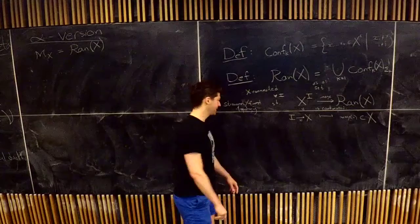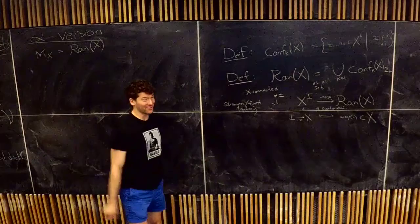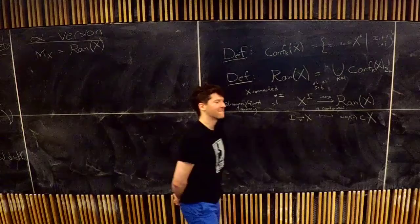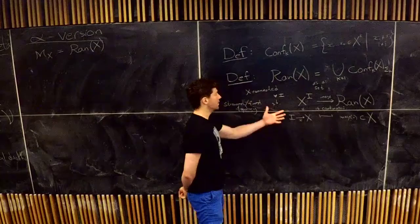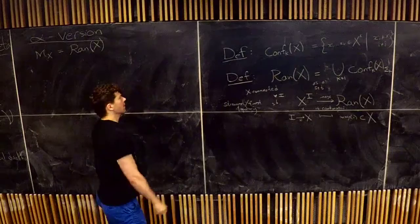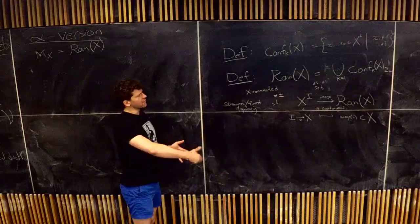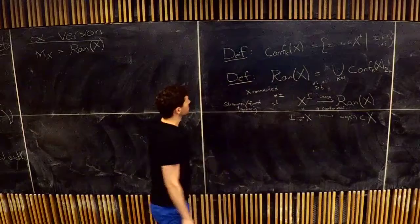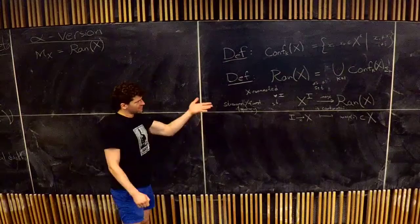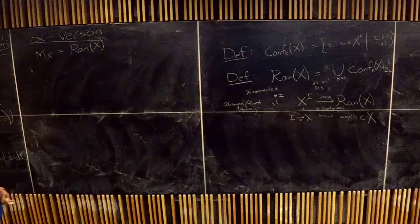Beilinson and Drinfeld credited Zevron for being the first to recognize the value of the algebraic-geometric analog of this space in algebraic geometry. That's why we call it the Ran space. This space is kind of infinite-dimensional, but it has a filtration by cardinality with finite-dimensional layers. It's a little intimidating, but it has ways of accessing it.